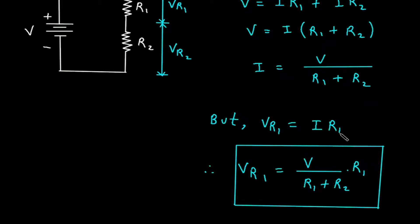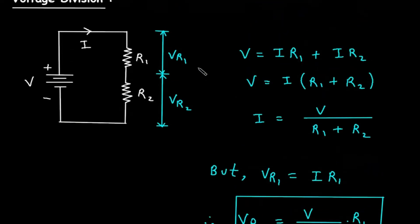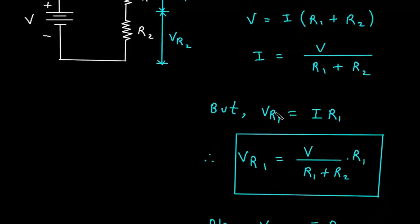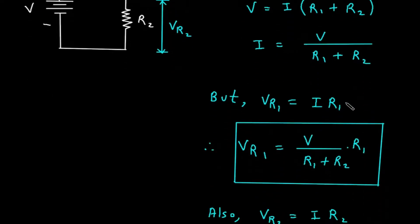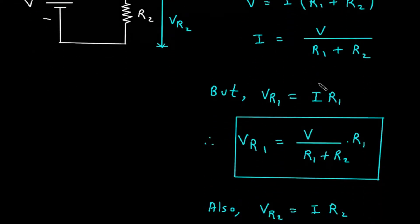Vr1 is equal to I into R1 according to Ohm's law. Now, if we substitute the value of I, this will be Vr1 is equal to V divided by R1 plus R2, into R1.